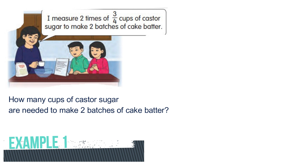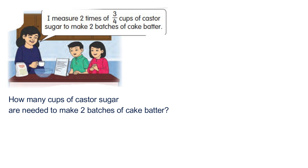Look at this dialogue: how many cups of caster sugar are needed to make two batches of cake batter? To make one batch, we need three over four cups of caster sugar. To make two batches, we need to multiply two with three over four cups. Let's see how to solve this using a diagram.